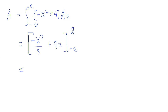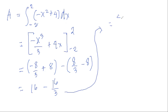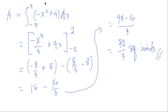Using the upper limit first: negative 8 over 3 plus 8, minus the lower limit which gives 8 over 3 minus 8. Simplifying, this becomes 16 minus 16 over 3, which equals 48 minus 16 over 3, giving us 32 over 3 square units. Our final answer is 32 over 3 square units.